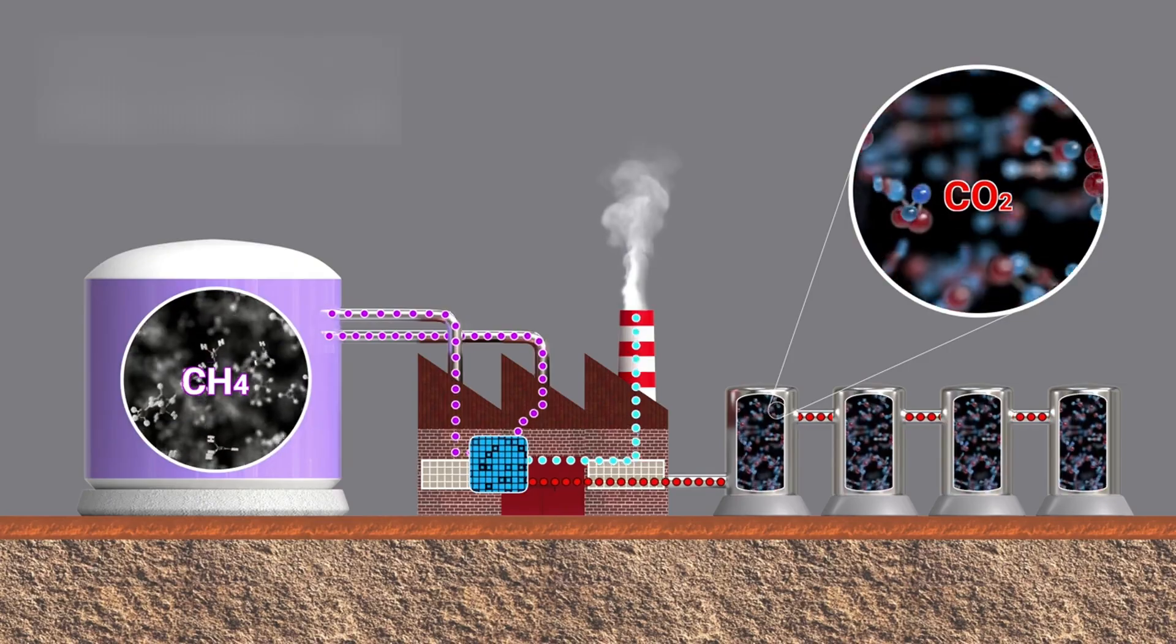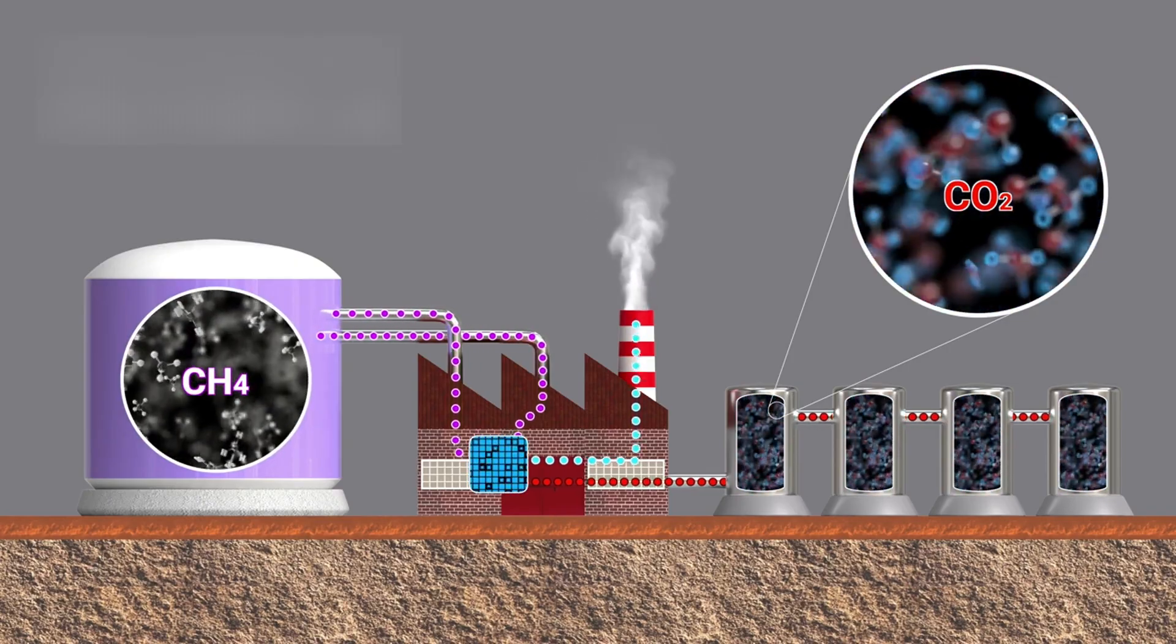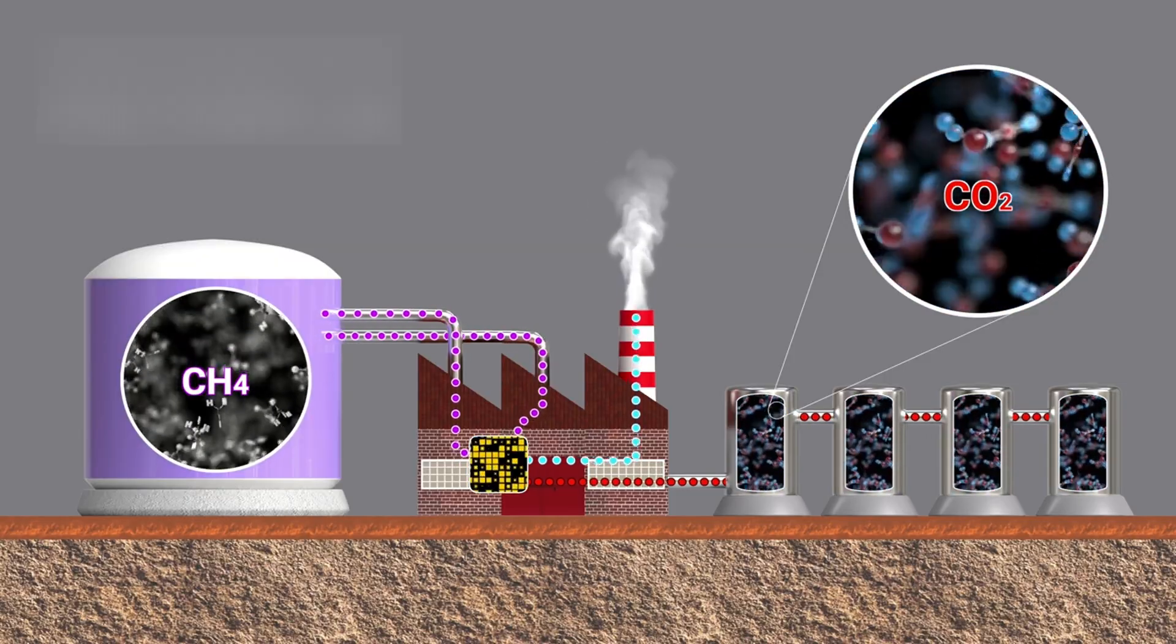Still, the detection of key molecules like methane and carbon dioxide, combined with the absence of ammonia, aligns with models predicting that this planet could indeed support liquid water.